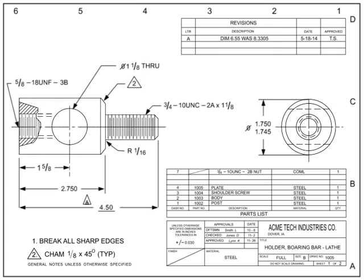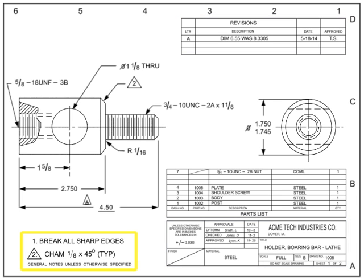Conventional parts of a drawing include the title block, the revision block, the notes list, the field of the drawing, and the list of materials or parts list.